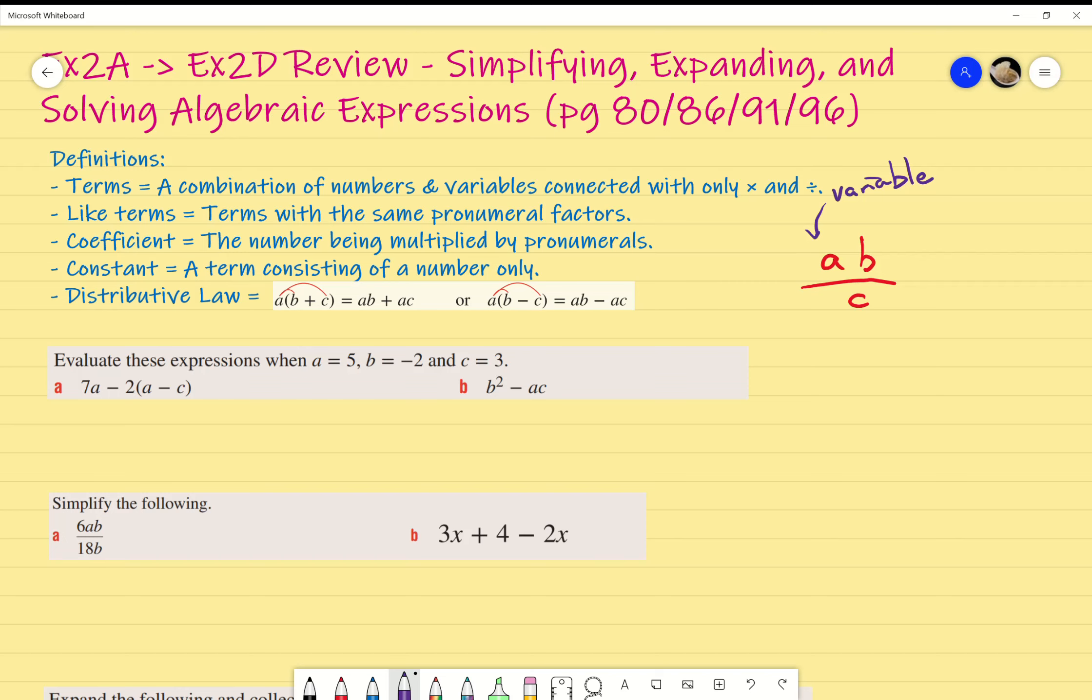I'm going to jump straight into the first example, stuff that you should be super familiar with. It's just substitution. We have A equals 5, B equals negative 2, and C equals 3. Remember, we need to make sure we use brackets. I use brackets incessantly, way too much, but that's so I can keep track of where the values need to be. I really recommend you guys do that.